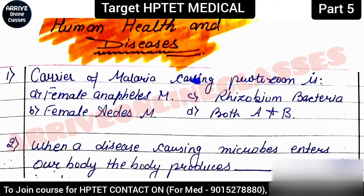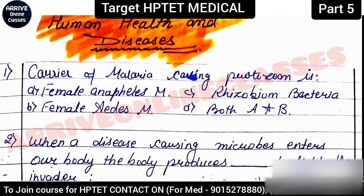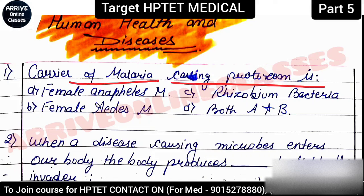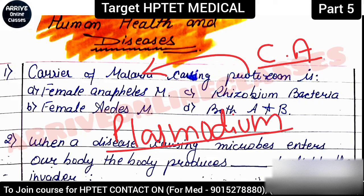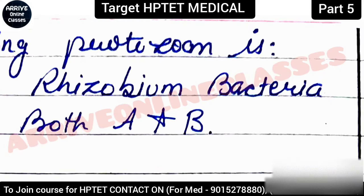The first question is: 'Carrier of malaria-causing protozoa is?' This question asks about the causal organism of malaria. The causal organism is a protozoa called Plasmodium. Plasmodium is the causal organism of malaria. The carrier (vector) is the female Anopheles mosquito.